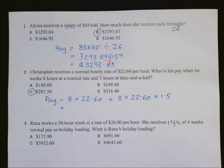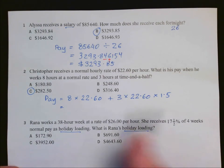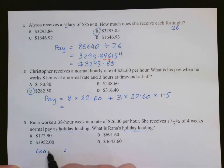For number 3, we have a 38 hour week and $26 per hour. Receiving 17.5% of 4 weeks normal pay as holiday loading. We were asked what is Raina's holiday loading, not her holiday pay. Holiday pay would be the 4 weeks of normal pay plus the loading. So to calculate the loading, we need to find out her 4 weeks normal pay. So her normal pay is 38 times $26 per hour.